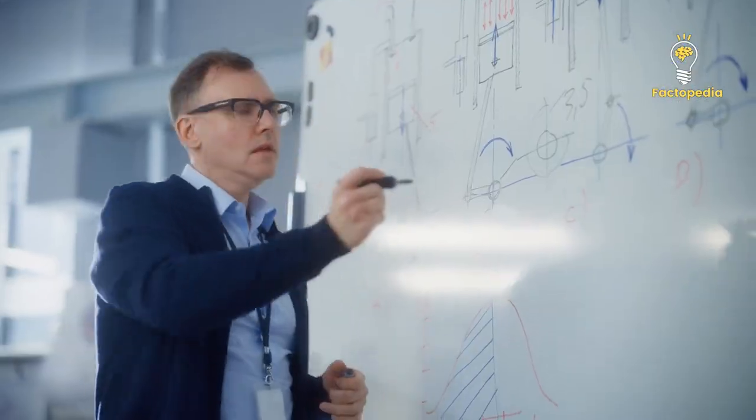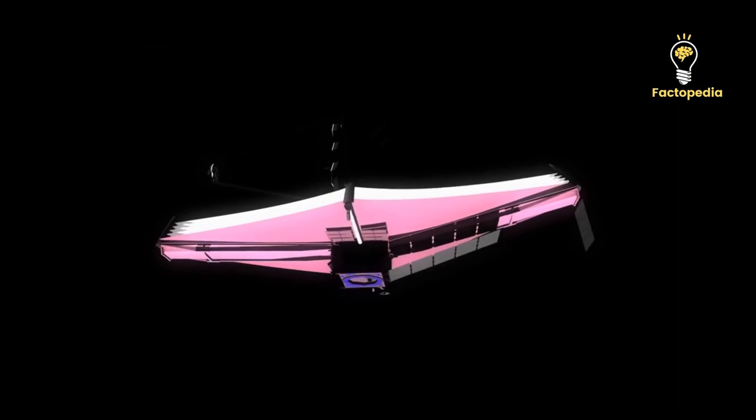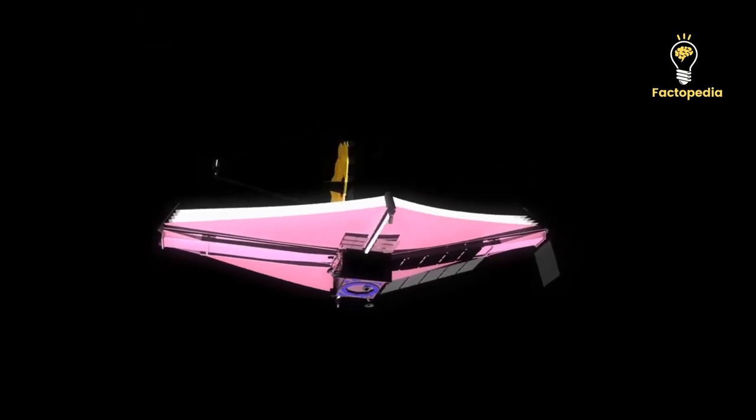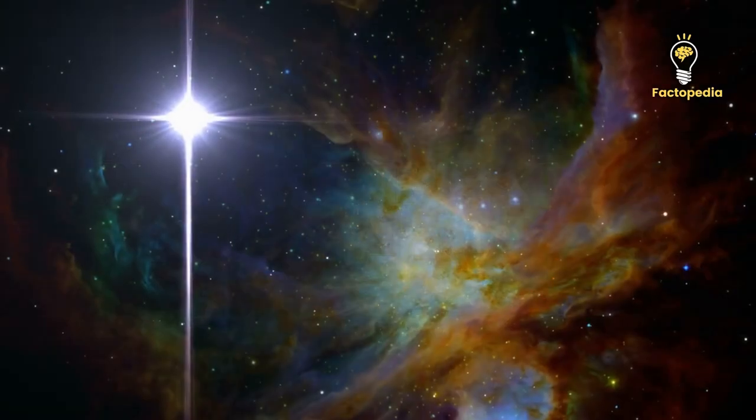This innovative perspective paved the way for a transformative research journey where the observations of the James Webb Space Telescope emerged as a critical tool, shedding light on the early universe's mysteries. The James Webb Space Telescope's significant observations centered on a distant galaxy, GNZ-11, nestled within the high-redshift universe.